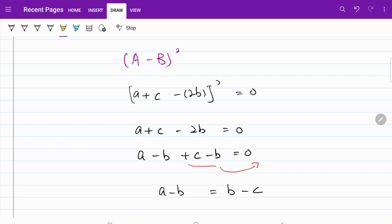If I move c - b to the right-hand side, what I have now is a - b = b - c, which is the expression that the original question is asking us to prove.